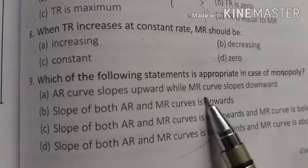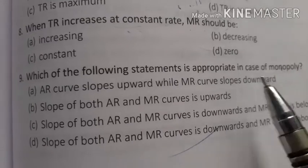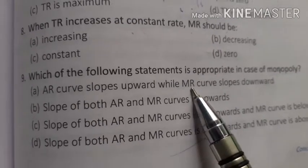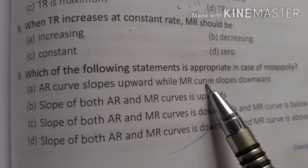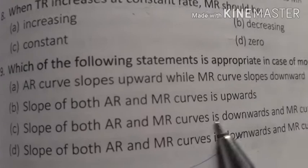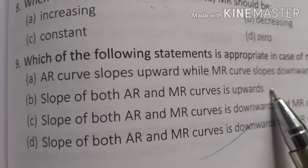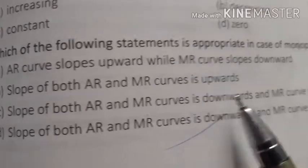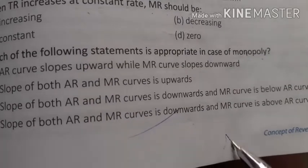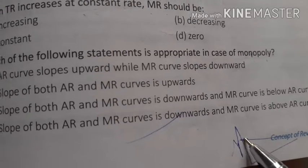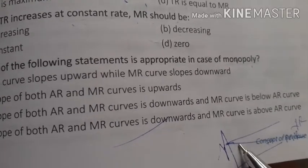Options: A) AR slopes upward while MR slopes downward, B) both AR and MR slope upward, C) both AR and MR slope downward and MR is below AR. In monopoly, the AR curve does not slope upward. The correct situation is that both AR and MR are downward sloping and MR lies below AR. So C is the right answer.